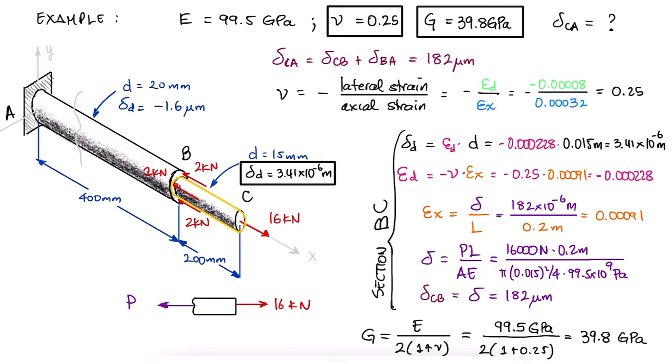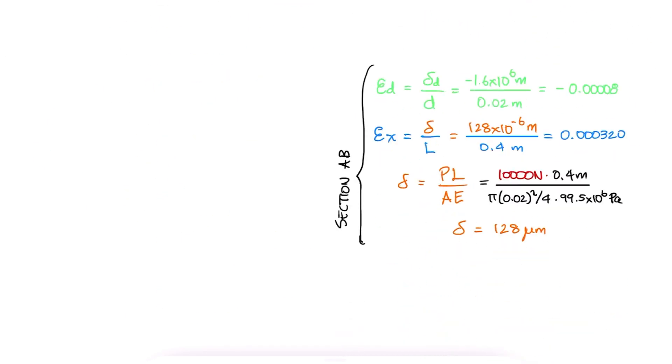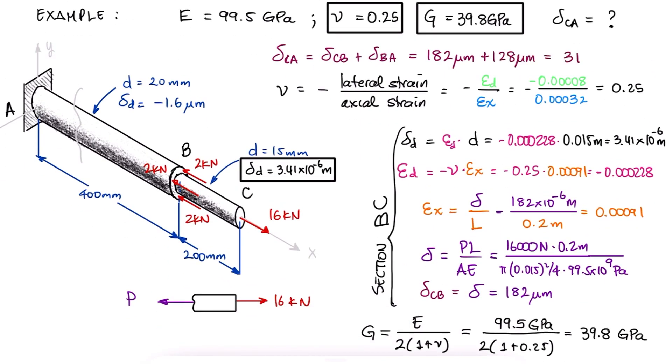Since BC is elongating because of the positive value of delta in purple, which means that C is moving away from B in the positive x-axis, and from before, delta BA is equal to positive 128 microns, again because section AB is elongating because of the positive value of the overall delta in orange. This means that B, with respect to the wall A, is moving in the positive x direction. This means that C, with respect to the wall A, is being displaced 310 microns in the positive x direction.